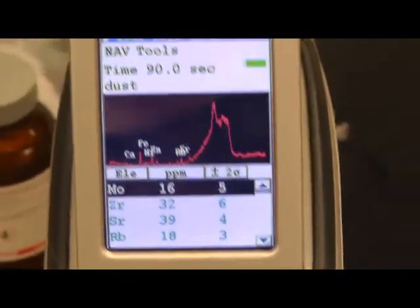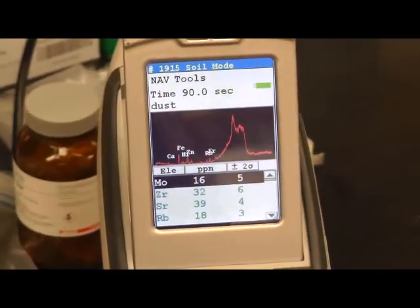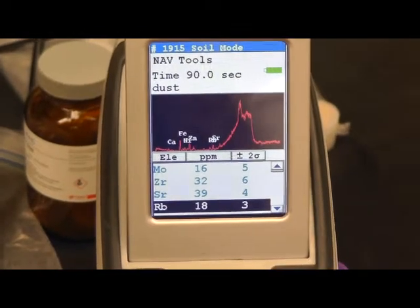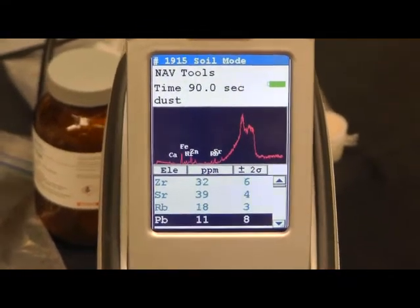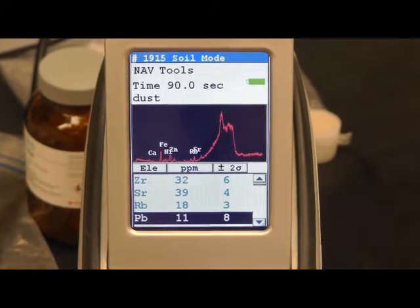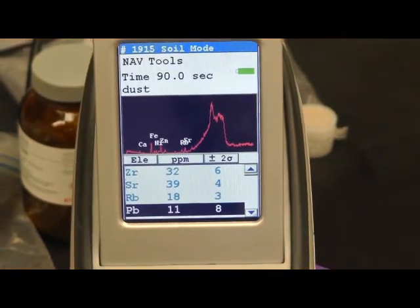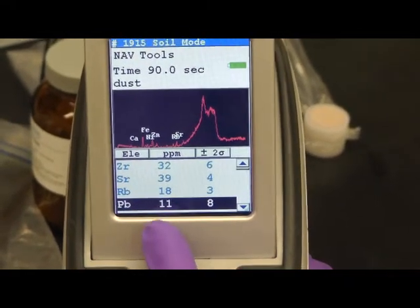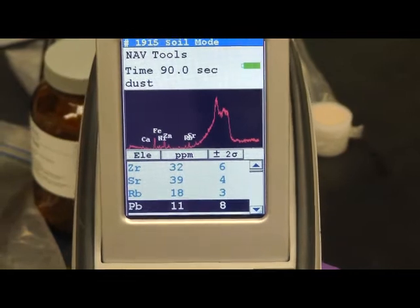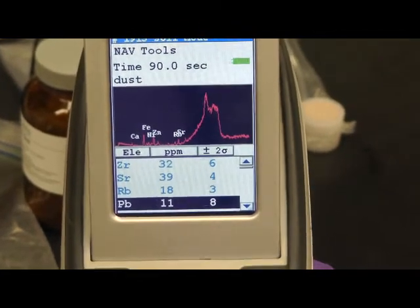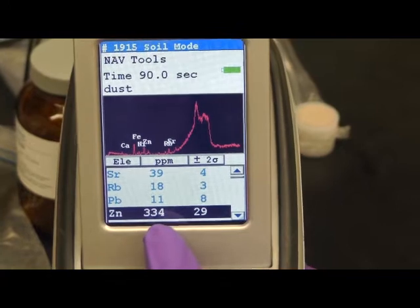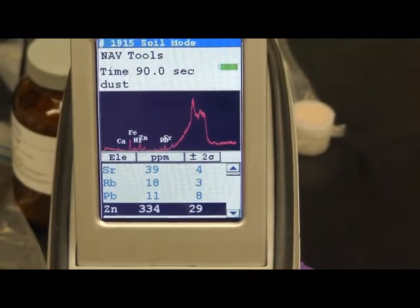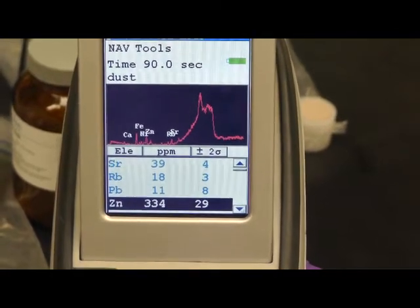Here's our measurement result for the dust samples. And then look at the number. Remember, the number of dust samples seems to be lower than the number of soil samples. However, we found certain amount of lead, 11 ppm of lead inside the dust samples. And now we found zinc, which is about 334 ppm of zinc in the dust samples.